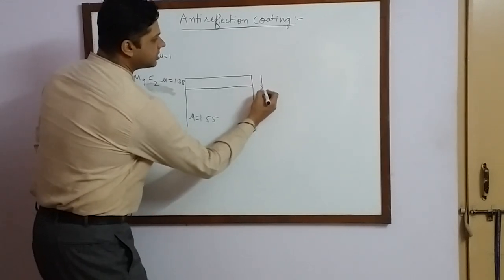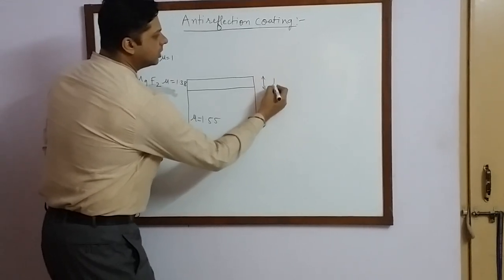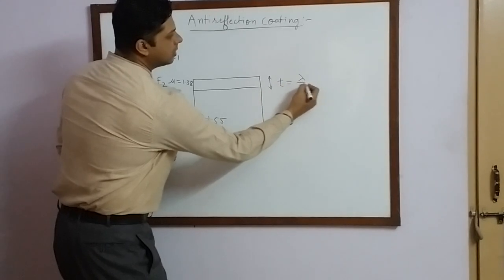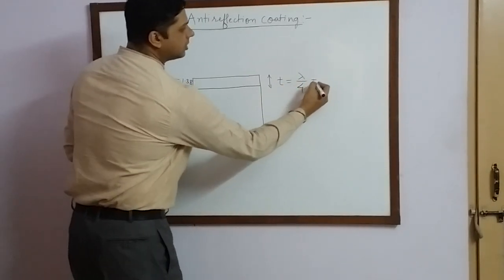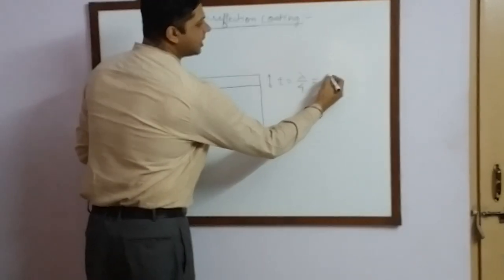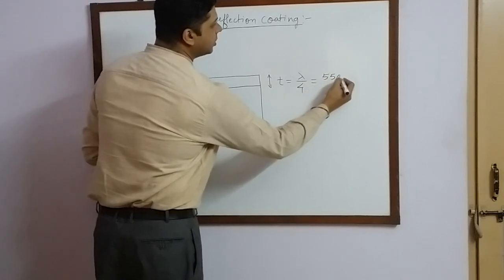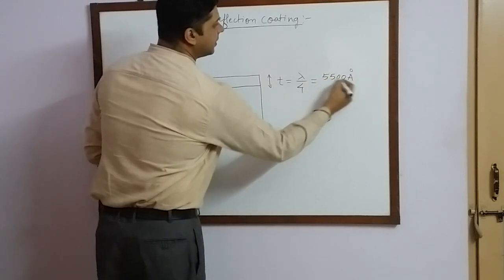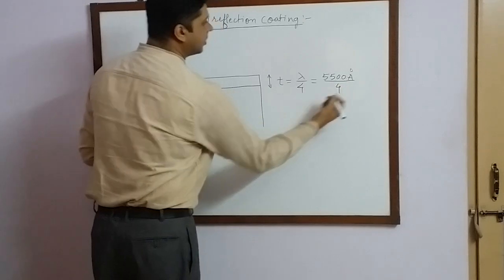The thickness of this film of MgF₂ is selected in such a way that it is equal to λ/4, where λ is the most sensitive wavelength to the human eye, which is about 5500 Ångströms divided by 4.